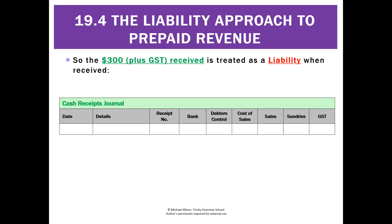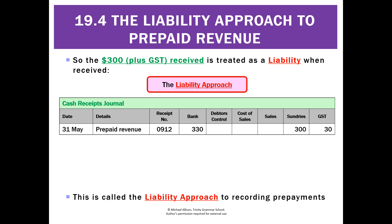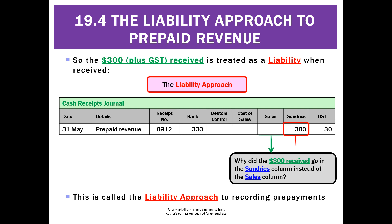So when we get this $300 plus GST, we're going to treat it as a liability. Whenever we receive money, that's going to go on our cash receipts journal. We'll record the date — 31st of May — and under details, instead of writing sales, we're going to write prepaid revenue because it's not a sale. We've got a receipt number. Under the bank column, we've received $330. We'll put the $300 received in prepaid revenue under sundries, and then we've got our $30 GST. We call this the liability approach to prepaid revenue. We left the sales column blank — we put the $300 in sundries, not in the sales column — because it's not a sale yet since we haven't earned it.